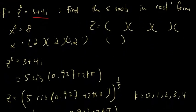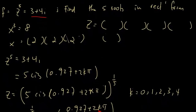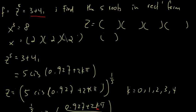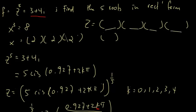Suppose z to the power of 5 equals 3 plus 4i — find the five roots in rectangular form. This is like asking: if x to the power of 3 is 8, what is x? So x1, x2, x3 all equal 2. Similarly, for the fifth power you need to find five roots by iterating k from 0 to 4.